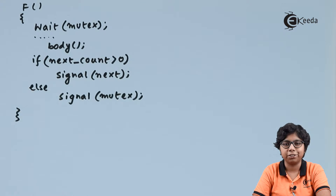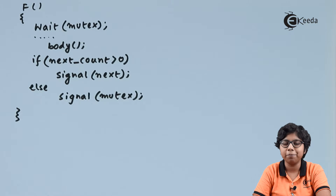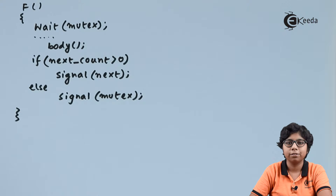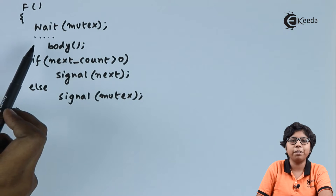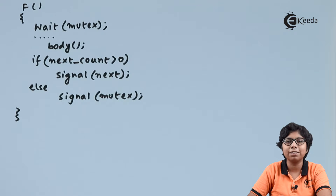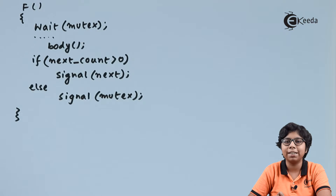To enter the monitor, we need to call the wait(mutex) operation. After wait(mutex) is performed, the body of function f is executed. After that, we check whether next_count is greater than zero — that is, we check if there is any process that has suspended itself on next.